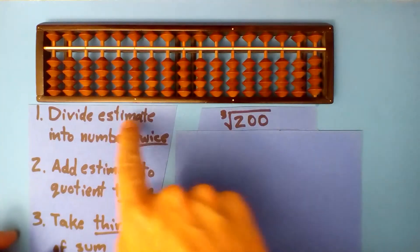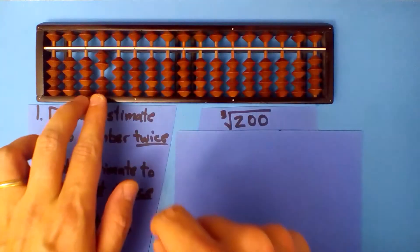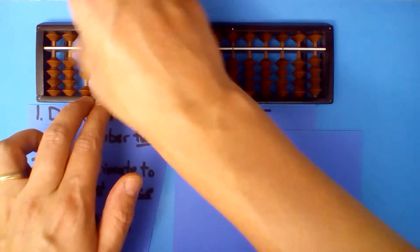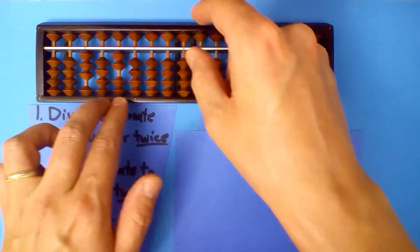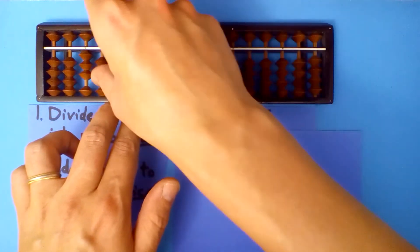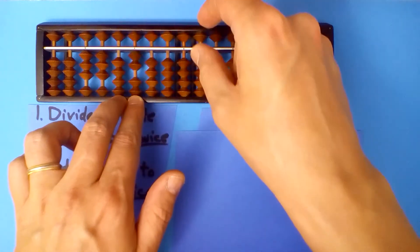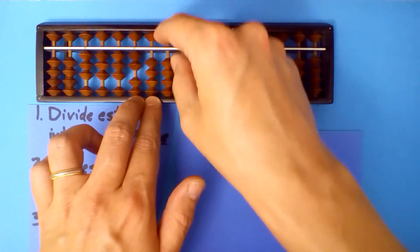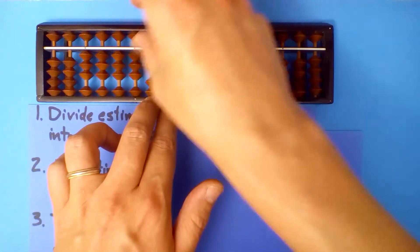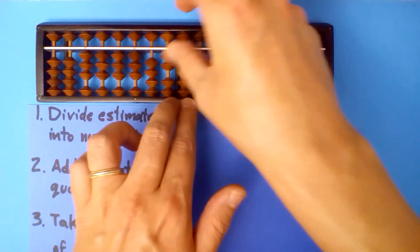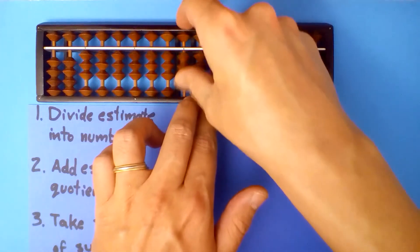We need to divide 6 into 200. 6 into 20 — 3 times. 3 times 6 is 18. 6 into 20 — 3 times, 3 times 6 is 18. This will keep going: 3 times, subtract 18; 3 times, subtract 18. The quotient digits are 3, 3, 3, 3.